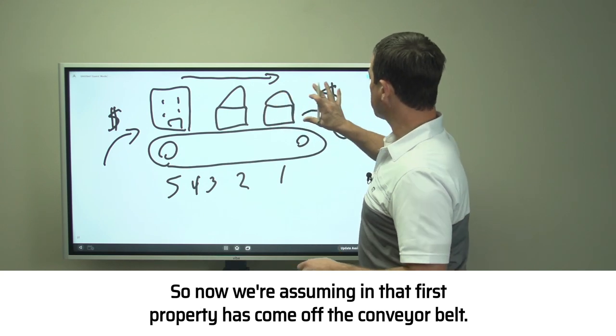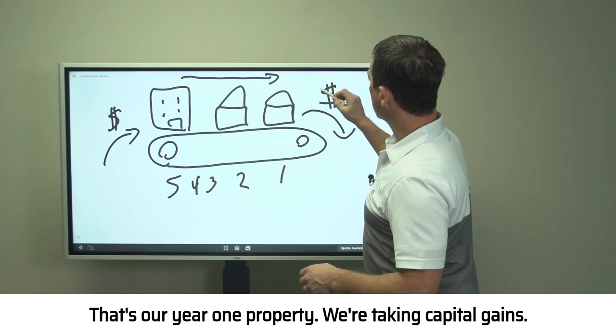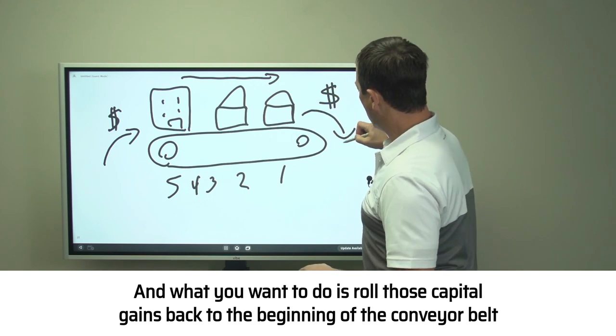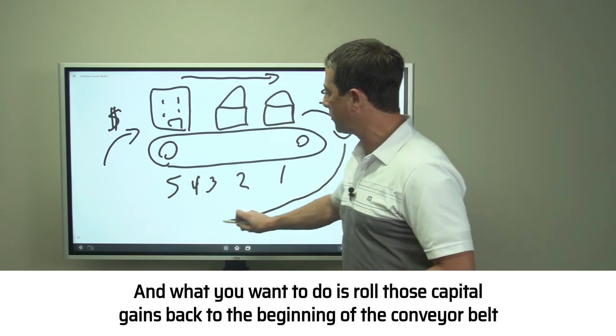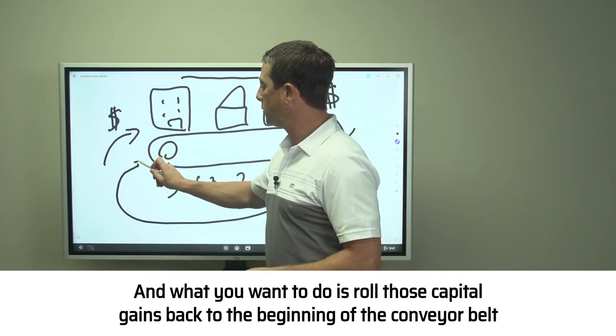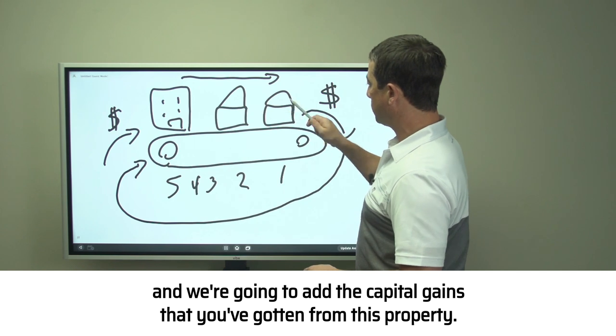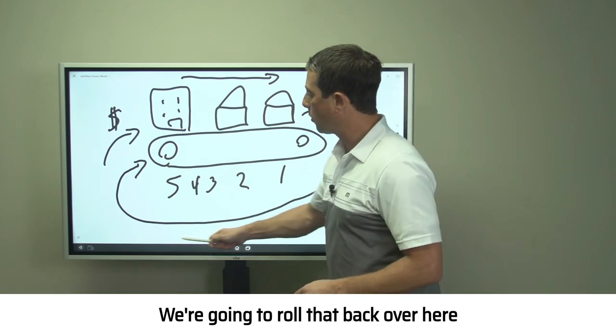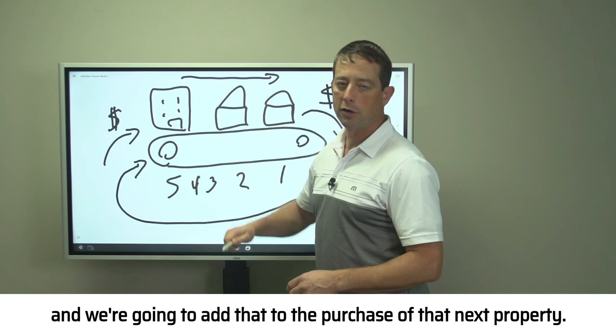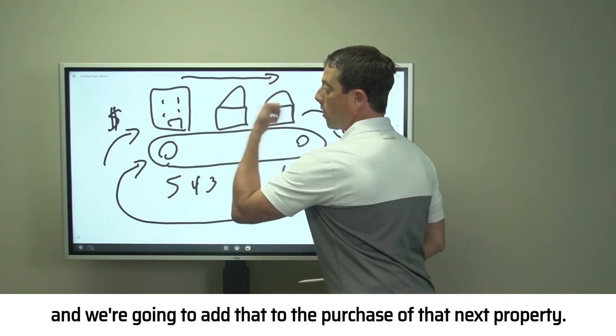Now we're assuming that first property has come off the conveyor belt—that's our year one property. We're taking capital gains, and what you want to do is roll those capital gains back to the beginning of the conveyor belt. We're going to add the capital gains from this property, roll that back over, and add that to the purchase of that next property.